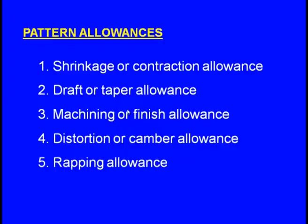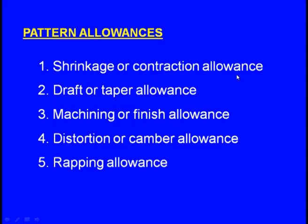This reduces the time spent creating the riser and runner separately. That is the benefit of the cope-and-drag pattern — it includes provisions for making the riser and runner. Now let us see the pattern allowances. These are the pattern allowances. Allowances means some increment or decrement to the dimension. There are 5 types: shrinkage or contraction allowance, draft or taper allowance, machining or finishing allowance, distortion or camber allowance, and finally rapping allowance.